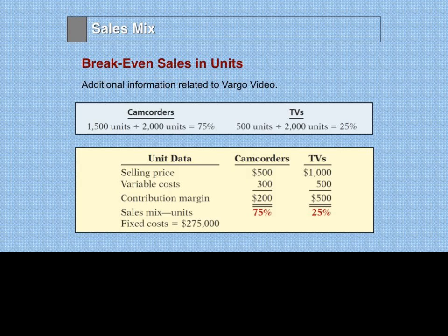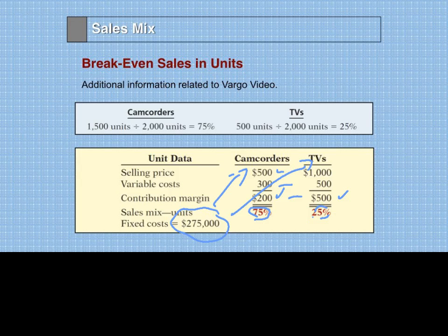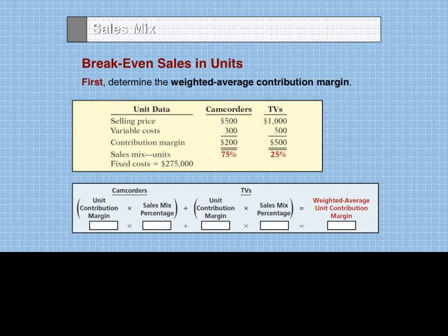Therefore, if we want the weighted average contribution margin, we need to consider that the camcorders have a contribution margin of $200 and the televisions have a contribution margin of $500, because they have different selling prices, different variable costs, and therefore a different contribution margin. But the fixed costs are common to both camcorders and televisions, so we can't divide the fixed costs. Instead, we come up with a weighted average contribution margin using that information.